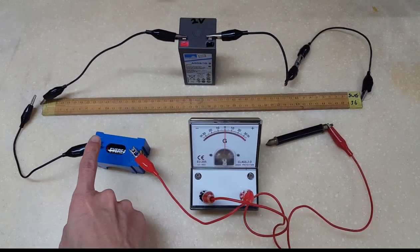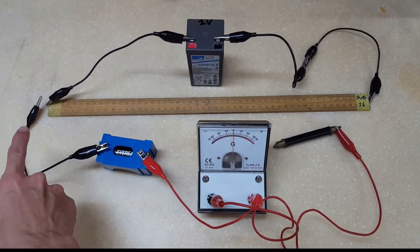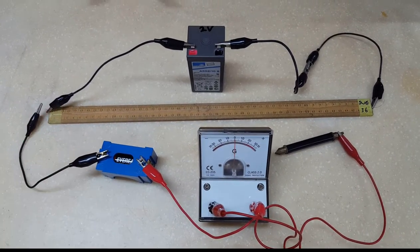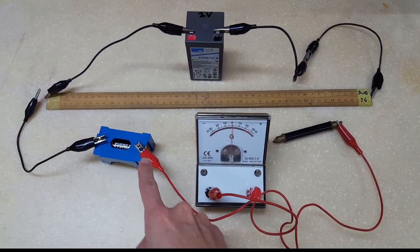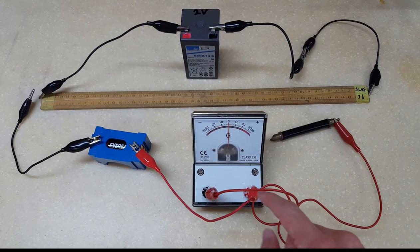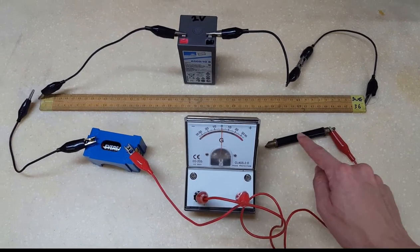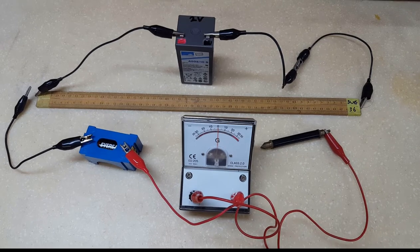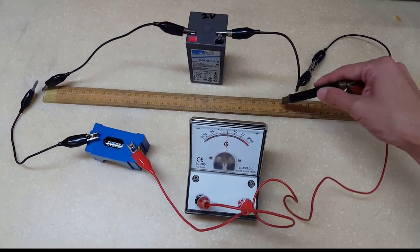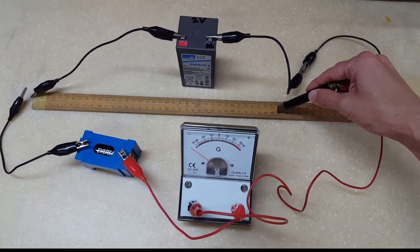Now notice that this end of the battery is connected to the left end of the slide wire and the other end of the battery is connected to this galvanometer and a jockey. So what I'm going to do is to slide this jockey along the slide wire.